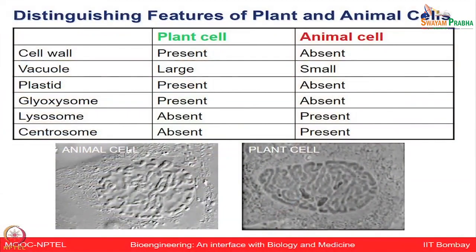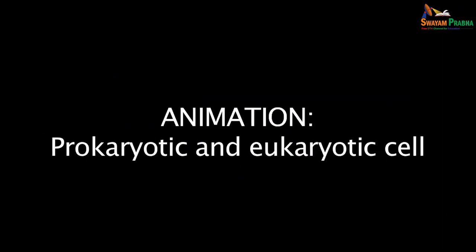Distinguishing features between plant and animal cells: plant cells have a defined cell wall, absent in animal cells; a very large vacuole, which is small in animal cells; and plastids and glyoxysomes, which are absent in animals. Lysosomes and centrosomes are absent in plant cells but present in animal cells. So far we have refreshed the basic role of different organelles, the evolutionary context of eukaryotic cell evolution, and the endosymbiotic theory. Let us now explore this in more detail through the following animation.